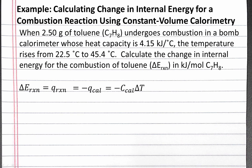To calculate the heat for the calorimeter, it's the heat capacity of the calorimeter times the change in temperature. We can plug in the numbers: the heat capacity of the bomb calorimeter is negative 4.15 kilojoules per degree Celsius, and our change in temperature is 45.4 degrees Celsius minus 22.5 degrees Celsius. Performing this calculation, we get negative 95 kilojoules.